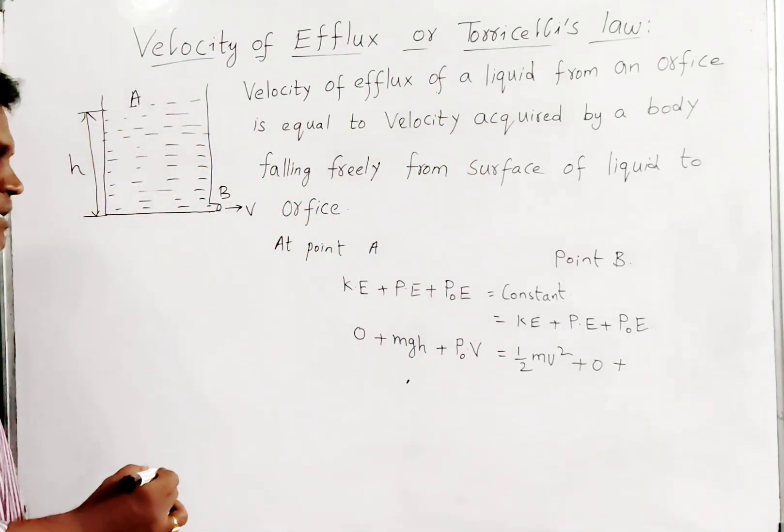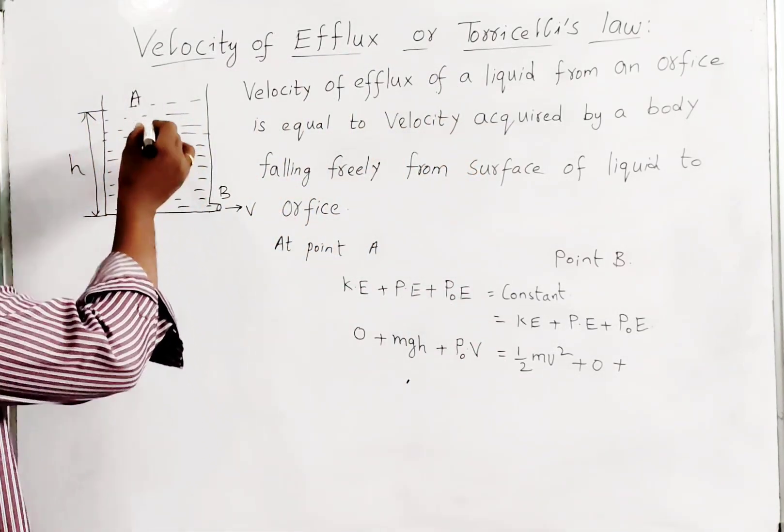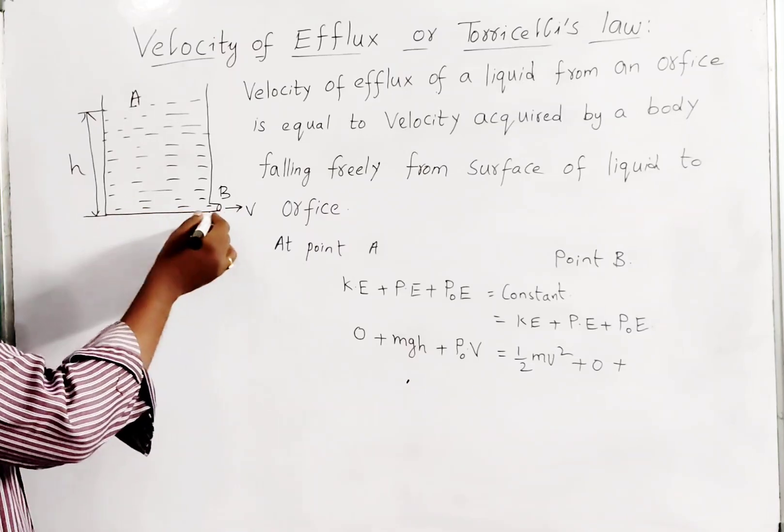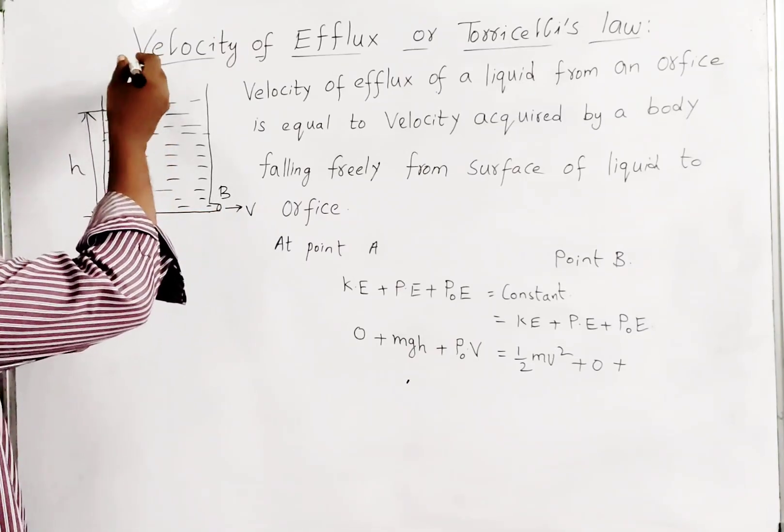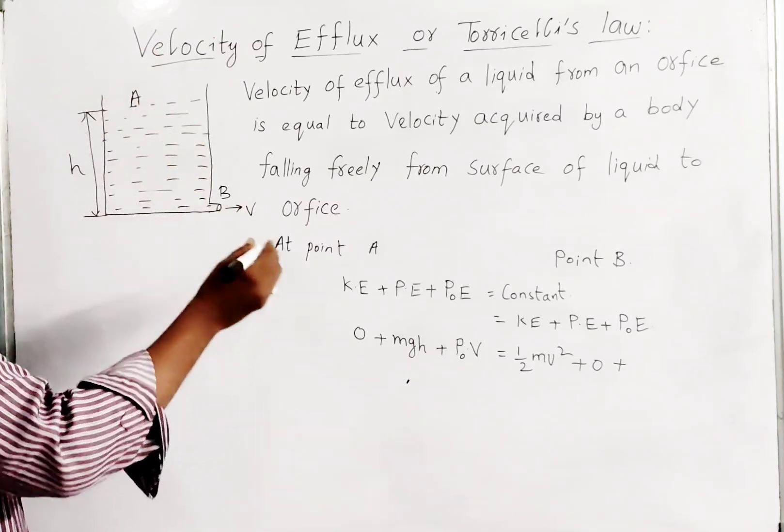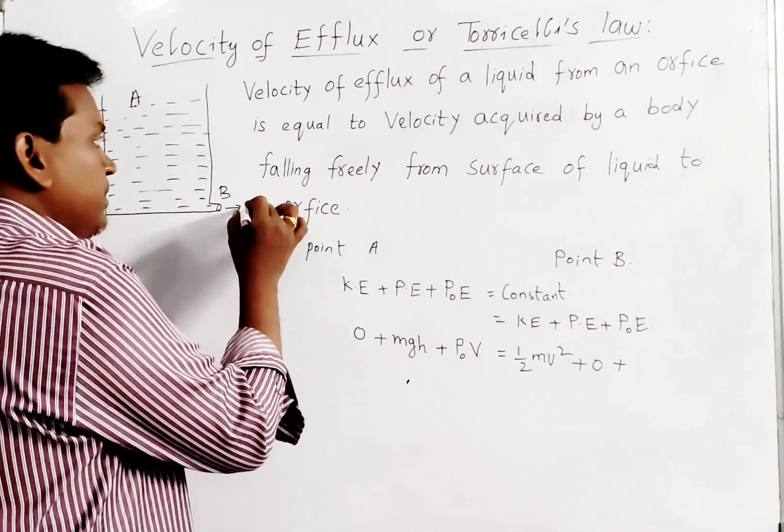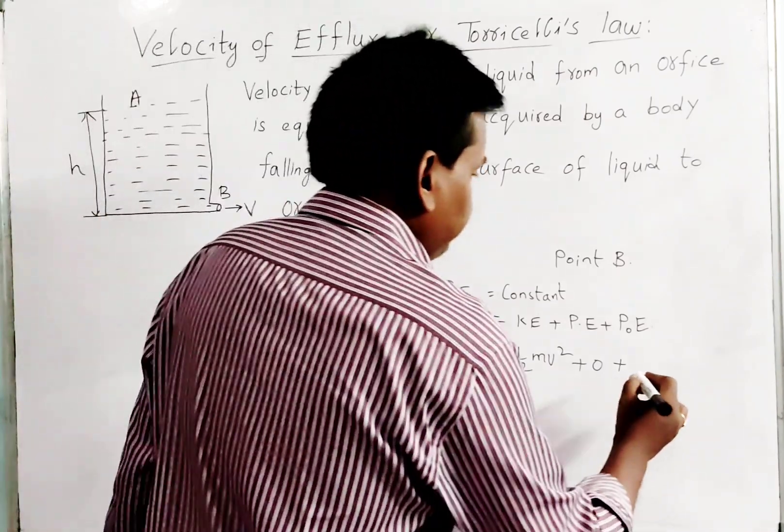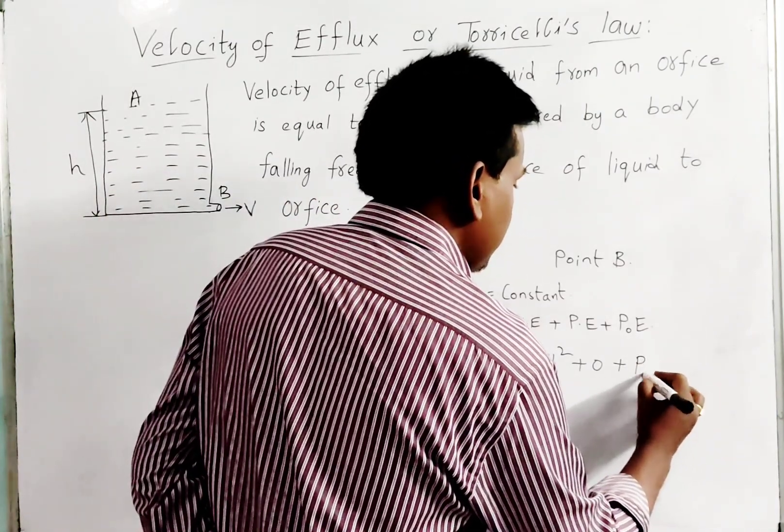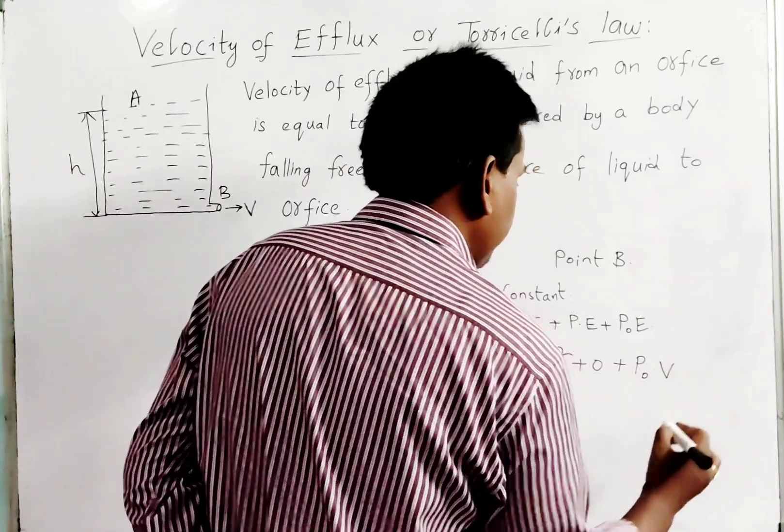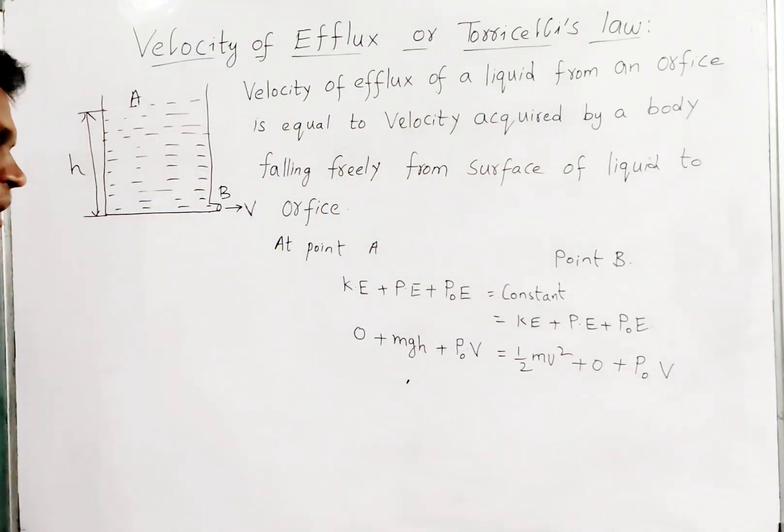Coming to the pressure energy, the same pressure energy will continue. Due to that top pressure only, through the orifice the liquid will flow out with some velocity. That velocity is called velocity of efflux. Here also the pressure is P₀ into volume V.